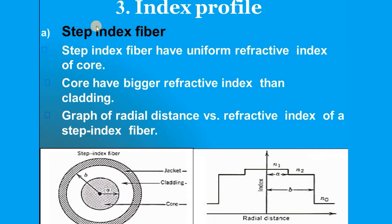Step means there is a discontinuity; index means refractive index. On the graph, the x-axis represents radial distance and the y-axis represents refractive index. The refractive index profile looks like a step — constant at n1 within the core radius a, then an abrupt drop to n2 at the cladding. This is the radius of the core, and this is the radius of the cladding.